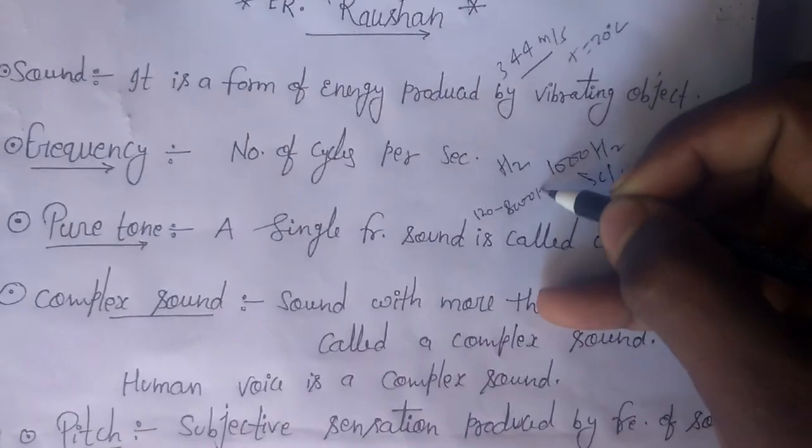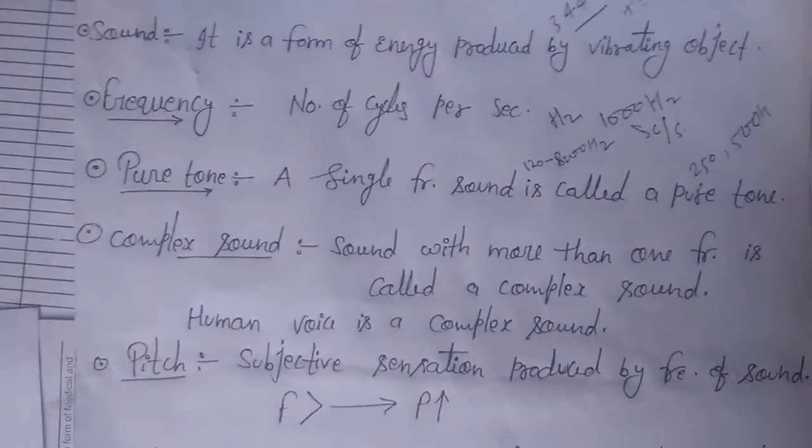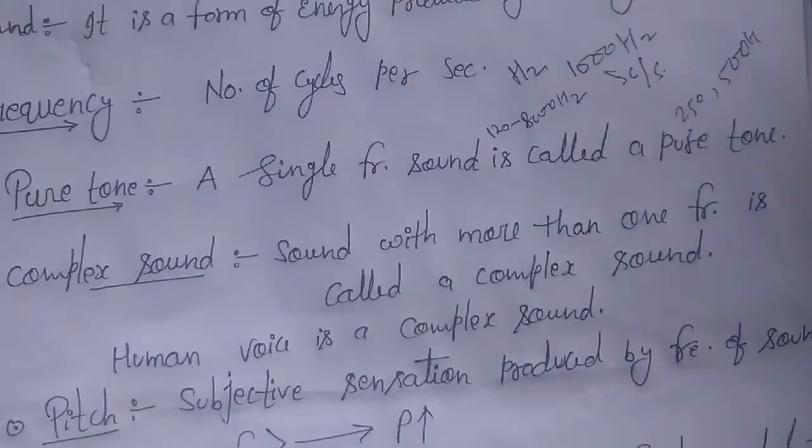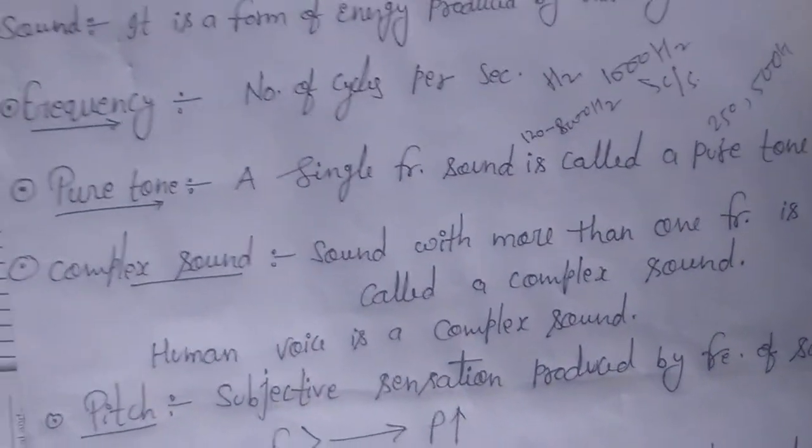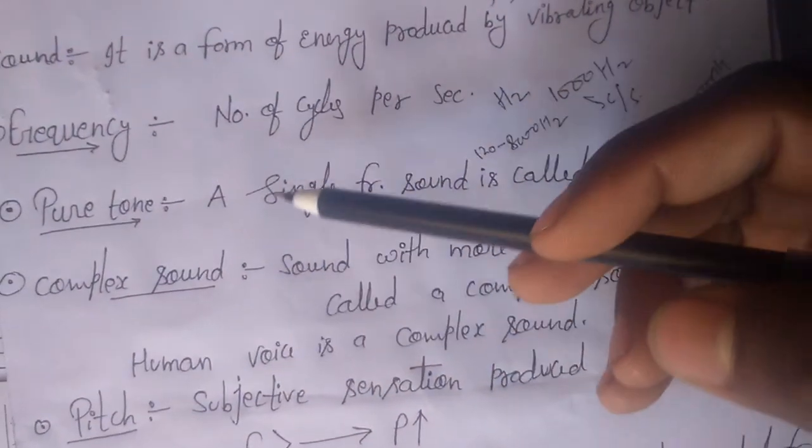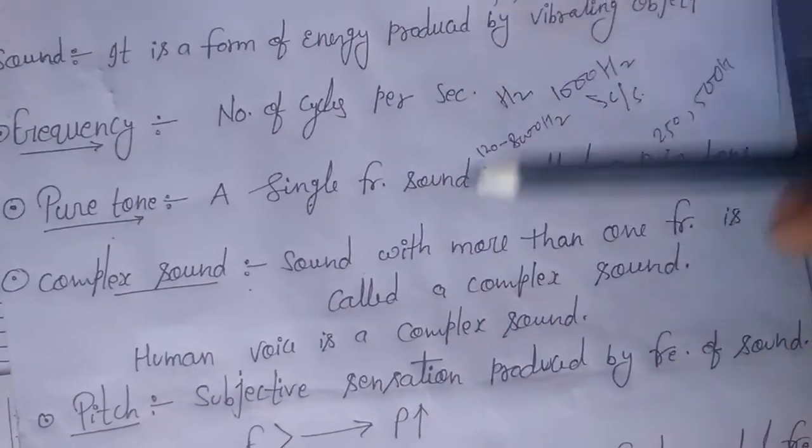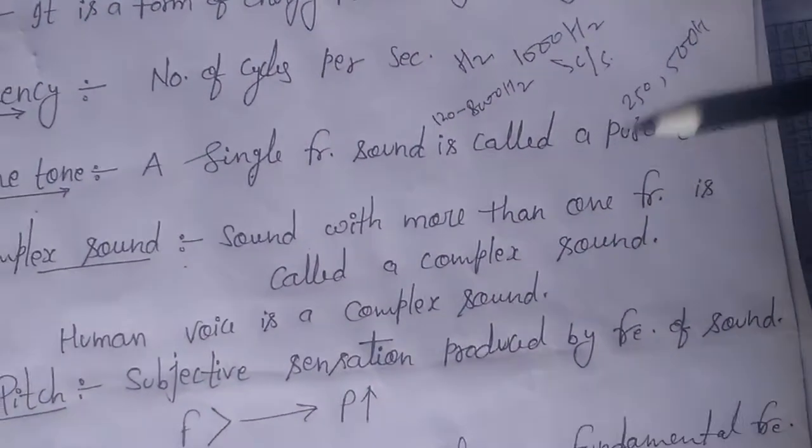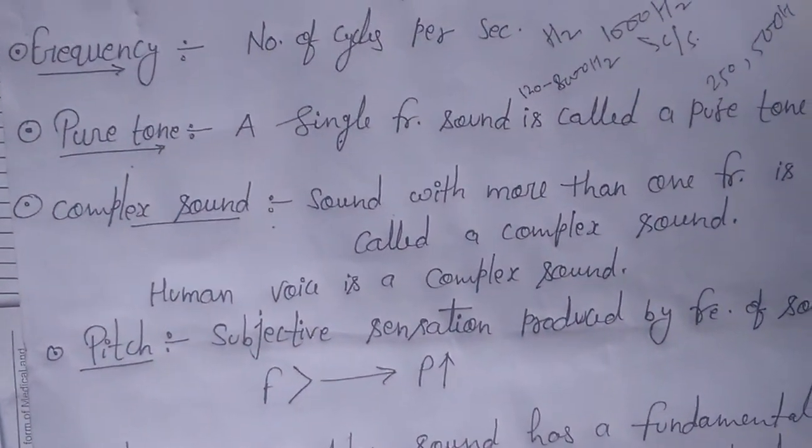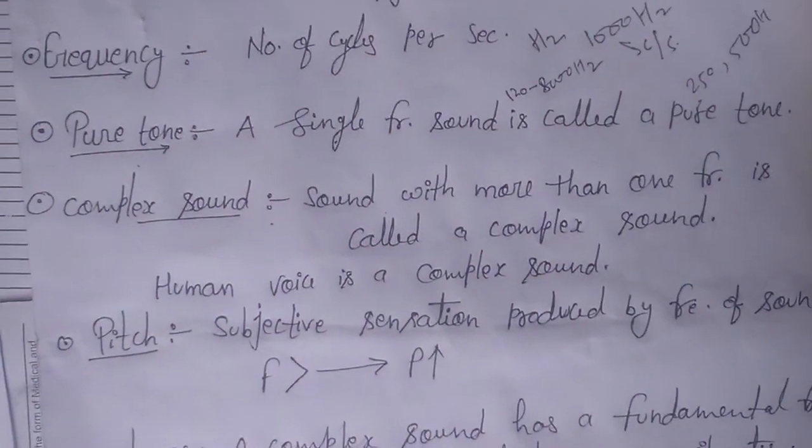Next is complex tone. A complex tone is sound with more than one frequency. While a pure tone has one frequency, a complex tone has more than one. Human voice is also a complex tone.